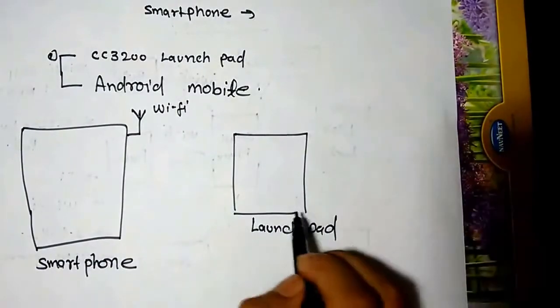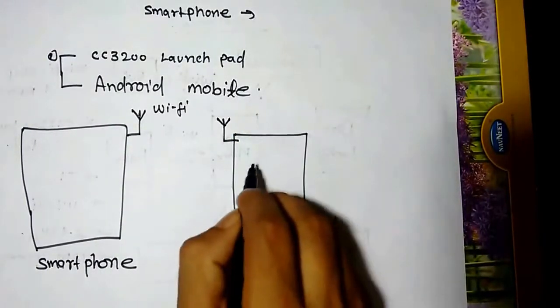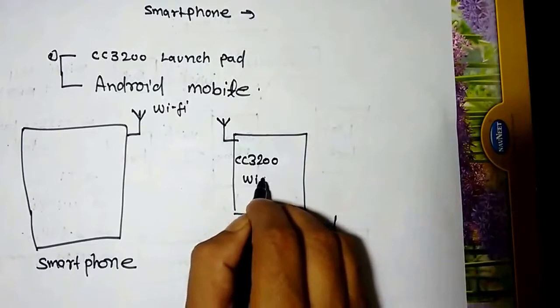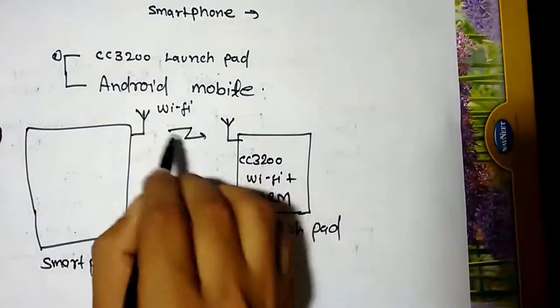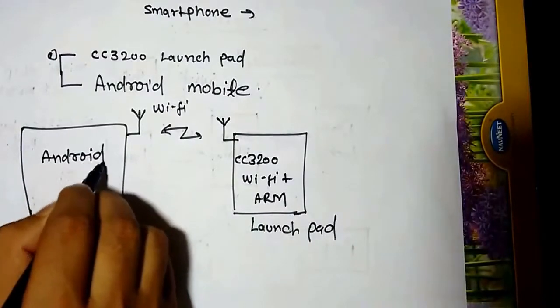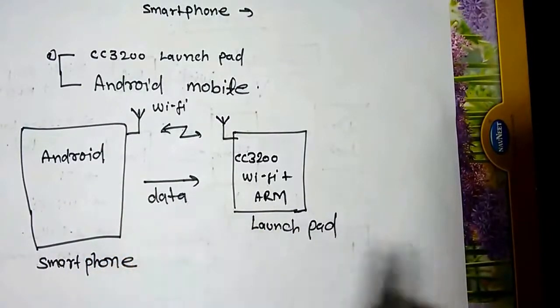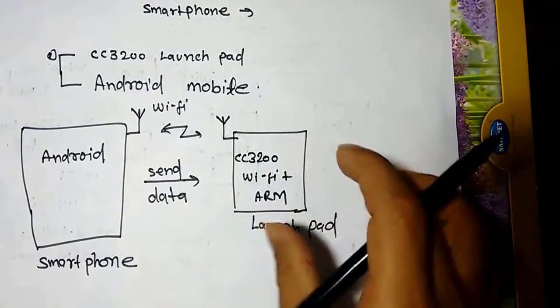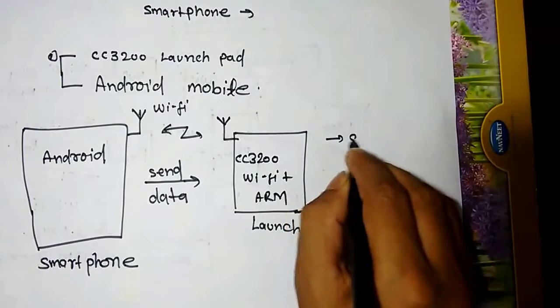Today every smartphone has Wi-Fi, and here the launchpad also has Wi-Fi. CC3200 has Wi-Fi plus ARM Cortex M4 microcontroller. There will be an android application running on the smartphone, and it will send some data to your CC3200 launchpad.